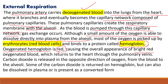Oxygenated hemoglobin gives blood its bright red color. Carbon dioxide is released in the opposite direction of oxygen — from the blood to the alveoli. Oxygen moves from alveoli into blood, while carbon dioxide moves from blood into alveoli.